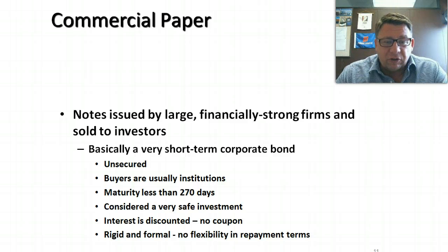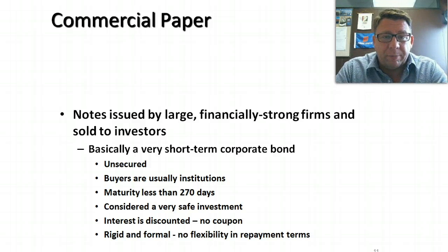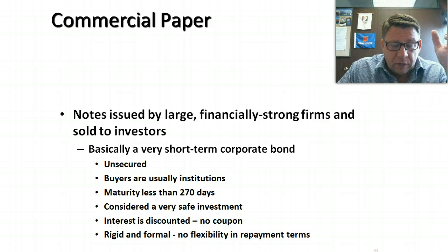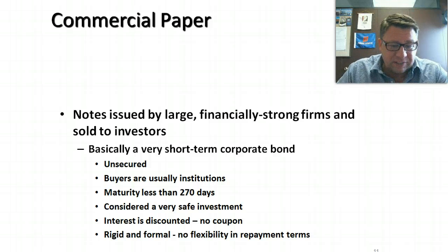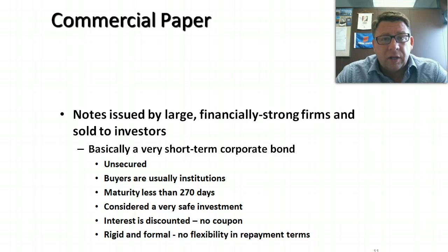Commercial paper. Commercial paper are notes issued by large, financially strong firms and sold to investors. Commercial paper is not necessarily sold by a bank — it's a big company. For example, IBM has a billion dollars in cash that isn't doing them any good, so they issue commercial paper, basically lending money on a very short-term basis to other firms. These are unsecured, the borrowers are usually other companies, and the maturity is very short-term — usually less than 270 days. They're considered very safe investments, but there's no flexibility about repayment. One of the primary reasons is that commercial paper is a negotiable instrument, which means it can be sold and traded between investors.